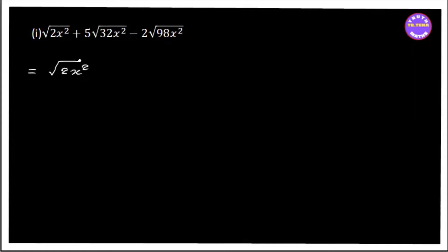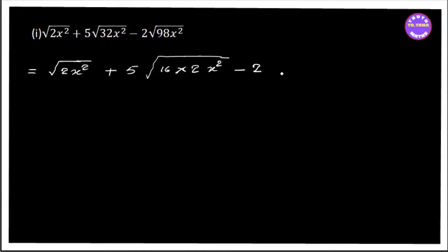2x squared, or 2x squared plus. Let's say these are 2x squared, let's say these are 3x squared, minus 2 is equal to 0. This is equal to 0. In 2x squared, this is equal to 0.